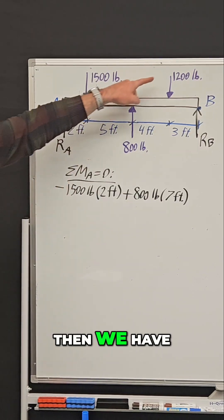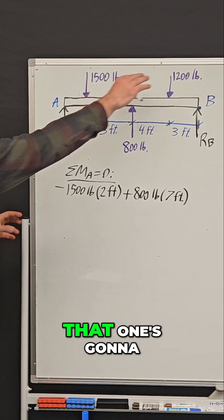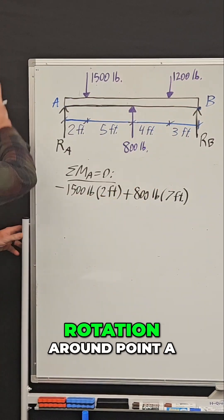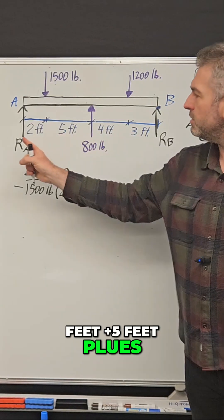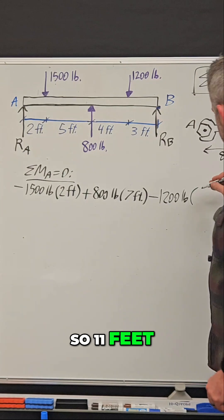Then we have this 1,200-pound force. That one's going to cause a clockwise rotation around point A, so that's a negative moment. It's 4 feet plus 5 feet plus 2 feet, so 11 feet.